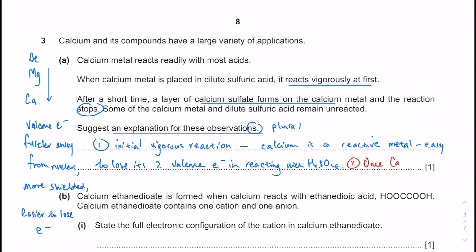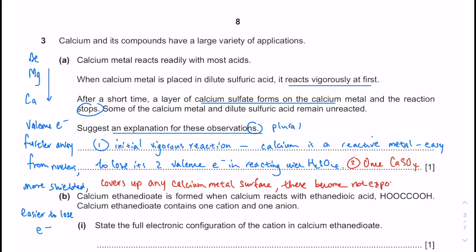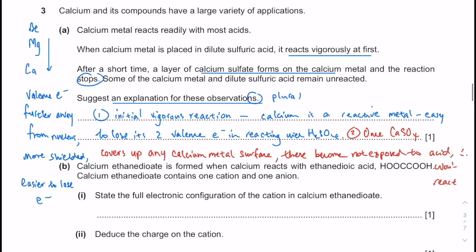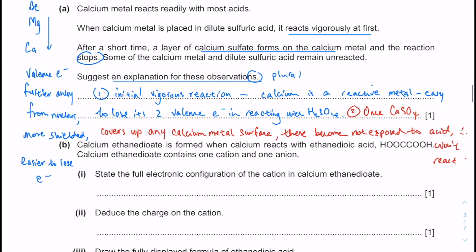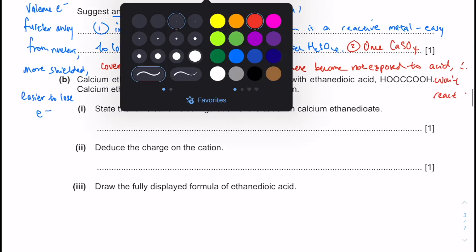Once calcium sulfate covers up any calcium metal surface, this becomes not exposed to acid. Therefore, it would not react. So I think that is pretty much a straightforward kind of observation.